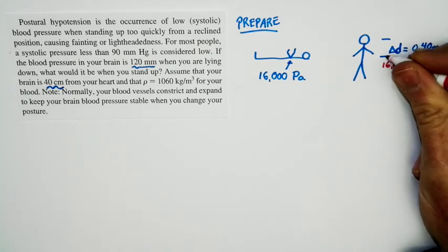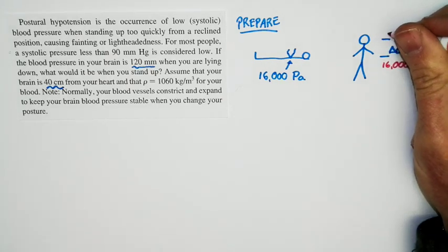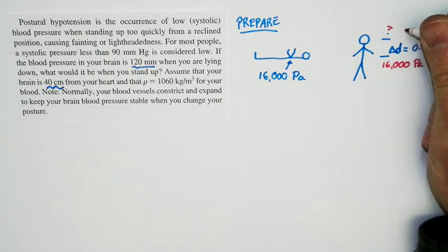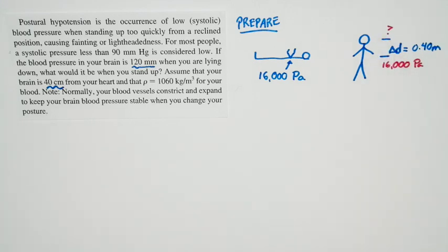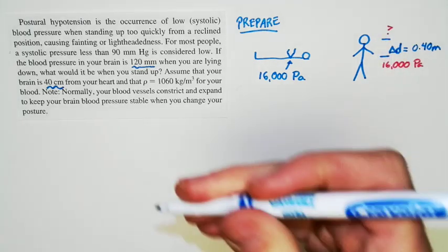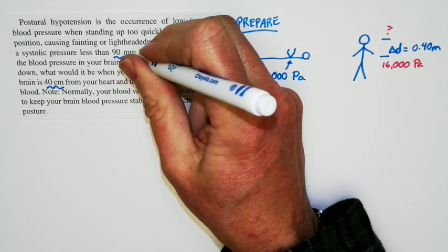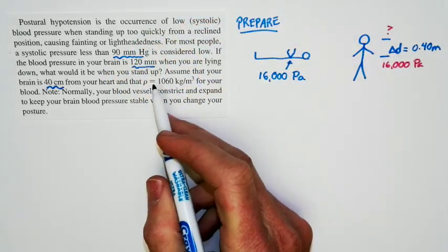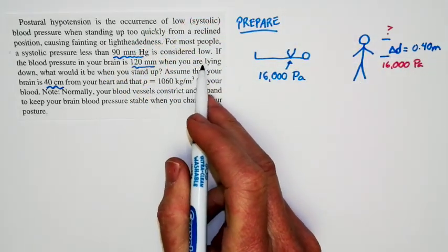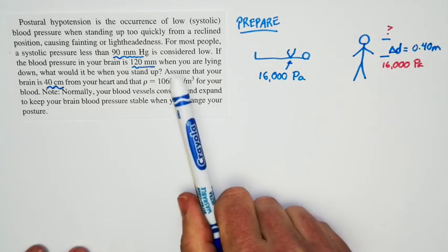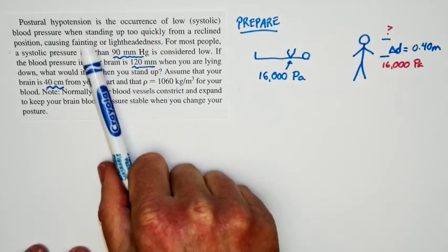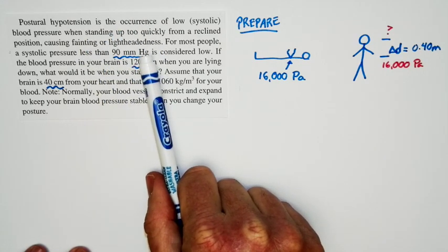The brain is higher up in the fluid column. And so the pressure up here will be less. And that's what we're trying to figure out. What is the pressure here? And we have a threshold to consider. We're told that if it's less than 90 millimeters of mercury, it's considered low. And if the pressure is low, you might feel slightly lightheaded. So I'm expecting a result that's lower than this. That's what I'm going to expect going into the problem.